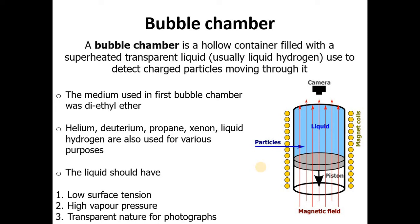Now our second topic is about bubble chamber. Bubble chamber is also a particle detector. It is a hollow container filled with a superheated transparent liquid, normally liquid hydrogen, used to detect charged particles moving through it. The medium used in first bubble chamber was diethyl ether. Helium, deuterium, propane, xenon, liquid hydrogen are also used for various purposes. The liquid which is used should have low surface tension, high vapor pressure, and transparent nature for photographs. We have liquid hydrogen and magnetic field around it, particles, and the camera is fixed above for viewing the tracks of the particles.